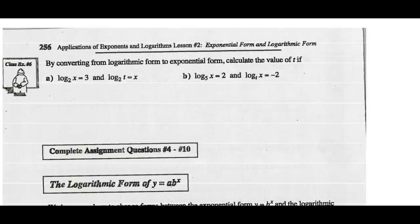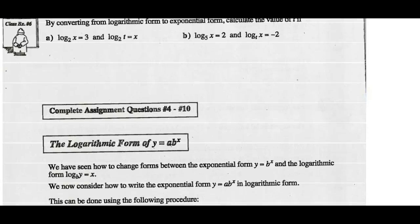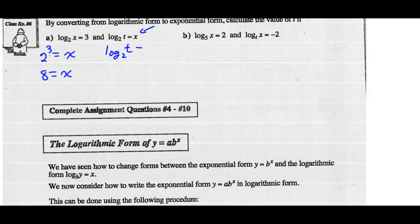Alright, page 256. By converting the logarithmic form to exponential form, calculate the value of t. So log of x base 2 equals 3 — write that in exponential form: 2 cubed equals x, so x equals 8. Now I can plug that value in. Log of t base 2 equals x, which equals 8. Write this in exponential form: 2 to the exponent 8 equals t, and 2 to the 8th is 256. So the value of t is 256.